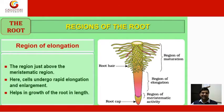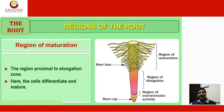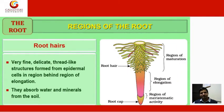The region of elongation is just above the meristematic region. Here, cells undergo rapid elongation and enlargement, which helps in the growth of the root in length. The region of maturation is proximal to the elongation zone; here the cells differentiate and mature. Root hairs are very fine, delicate, thread-like structures formed from epidermal cells in the region behind the elongation zone; they absorb water and minerals from the soil.